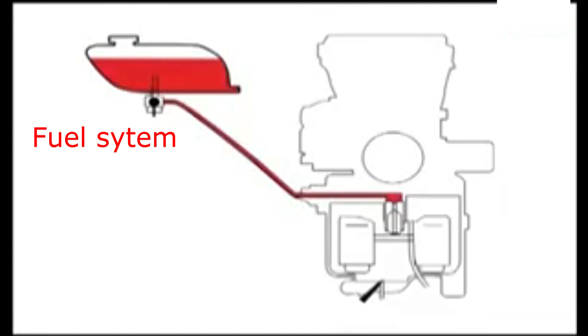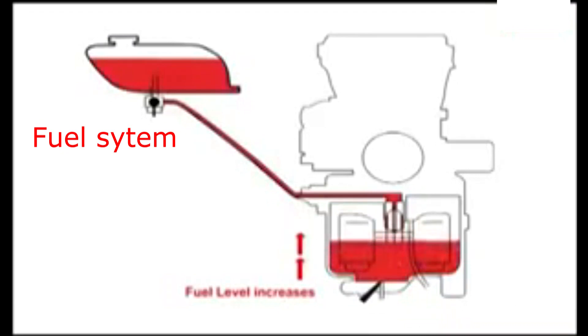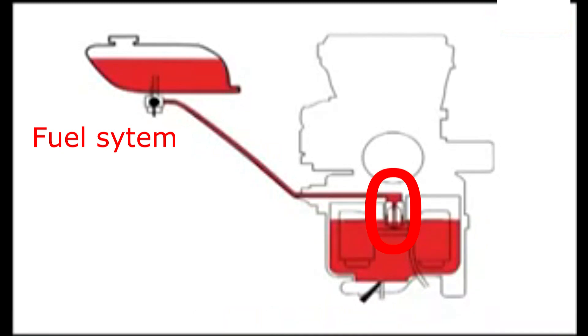Dirt, debris, or rotten fuel varnish can stick and gum up any one of these passages and cause fuel delivery problems. One of the most common is a sticking needle valve assembly. A little piece of dirt or varnish can get stuck and prevent the needle valve from seating properly, causing overflowing of the float bowl.